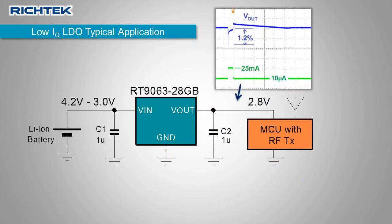To show this behavior, here is a transient measurement with a fast load step from 10 microamp to 25 milliamp. Due to the LDO's use of dynamic quiescent current, the LDO can react quickly to the load step. The LDO output does not drop more than 1.2%, ensuring stable microcontroller operation.